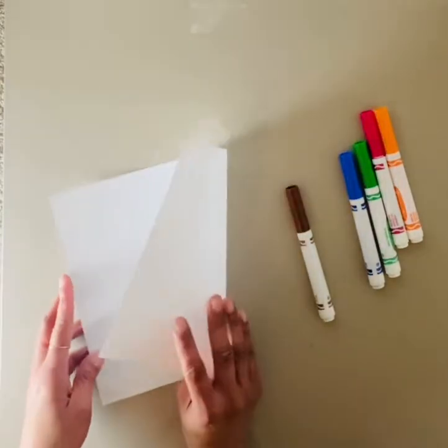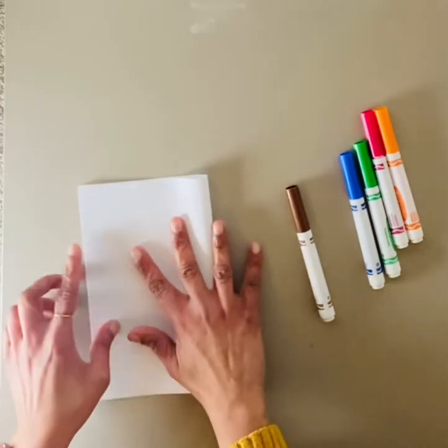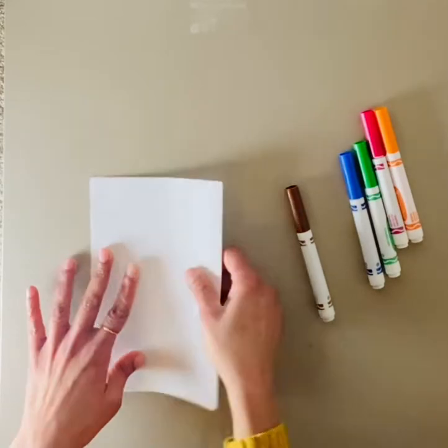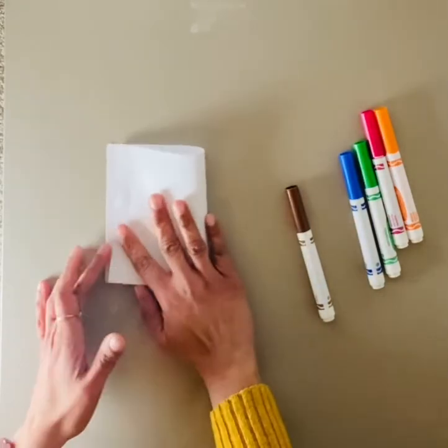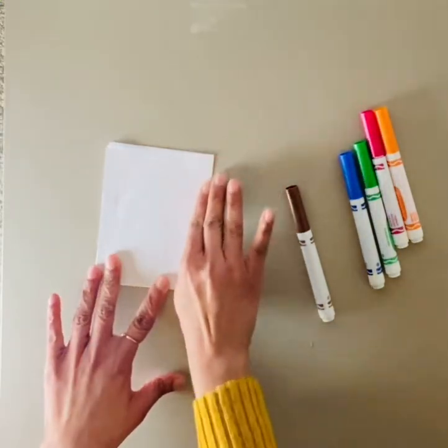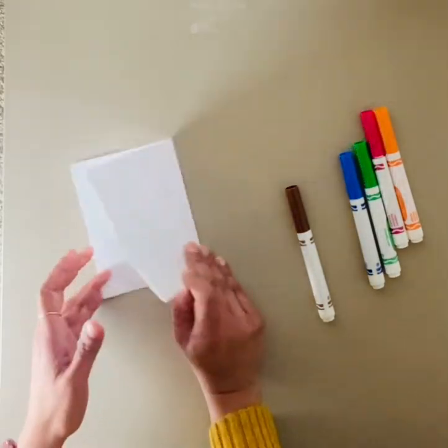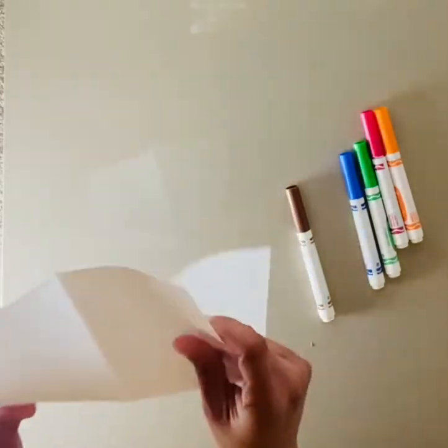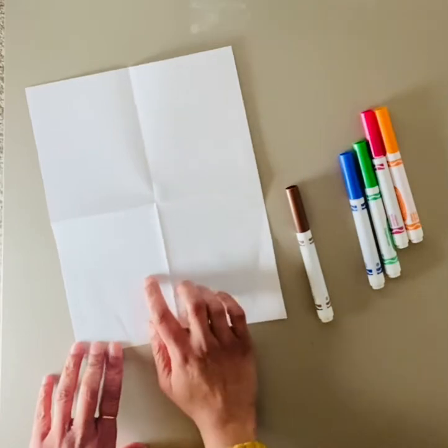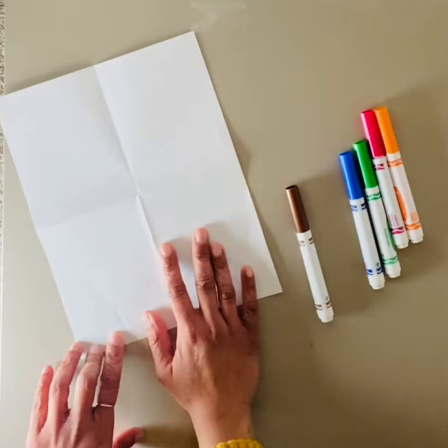The first step is to fold your paper in half. Once you do that, fold it in half again. Then go ahead and open the paper and you'll see four different rectangles. Each of these rectangles will represent a season.